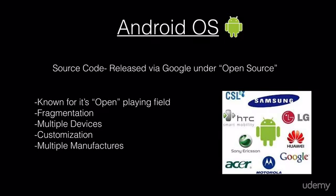Android OS is released by Google under open source licensing. The source code has been released openly to developers, which is what makes Android so popular — it's known for its open playing field. This open source code allows people to add new applications, software, and tweaks to the underlying look, feel, and functionality of Android, giving the community the ability to modify it and share it with other users.